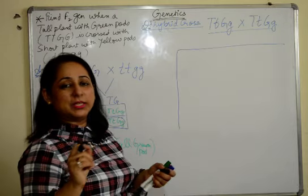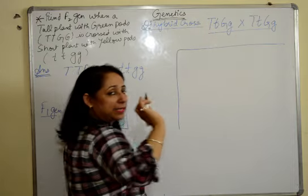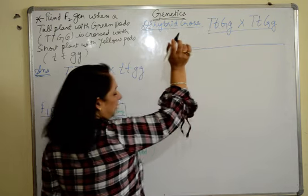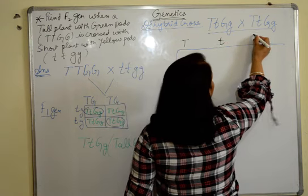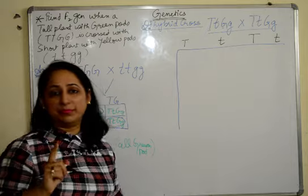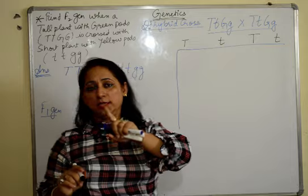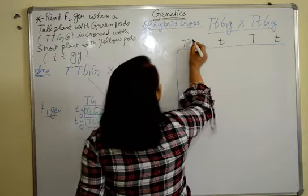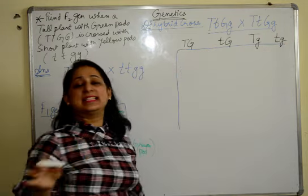First decide which alphabet is going to come first and which is going second. I will take it in serial order. T first and G second after that. So it is capital, small, capital, small. First one alphabet. I have taken T first. So capital, small, capital, small. Then comes the other one. Capital, capital, small, small. Learn this line.